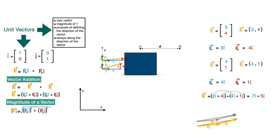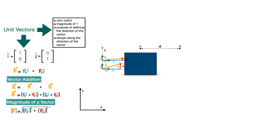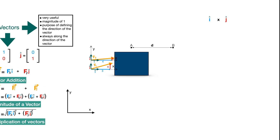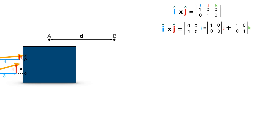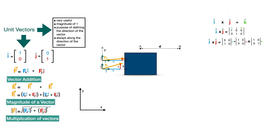Now let's look at vector multiplication. We know how to multiply matrices — it will work the same way, but we must include our unit vectors. The multiplication of unit vectors i-hat and j-hat follows this method. Note that k-hat represents the z-axis, which in the 2D case we consider non-existent. The result of i-hat times j-hat equals k-hat, which is an important and useful result used in many engineering calculations.